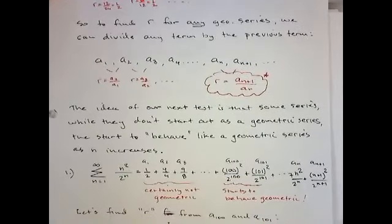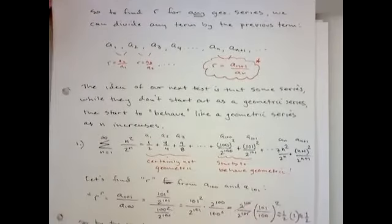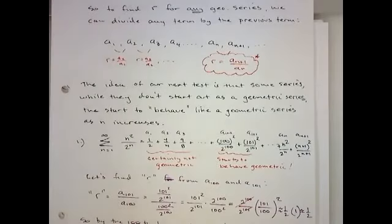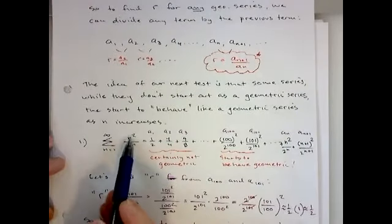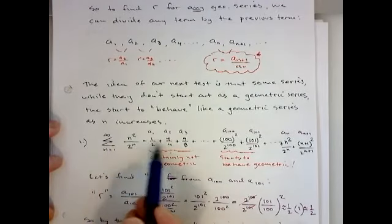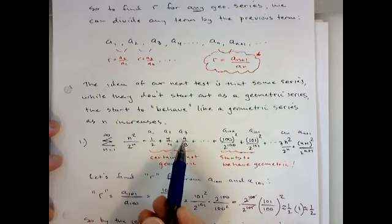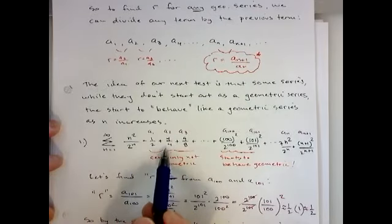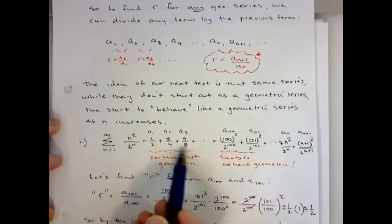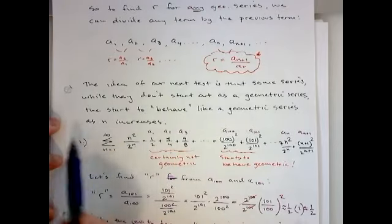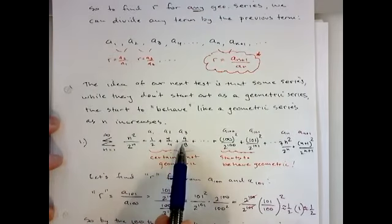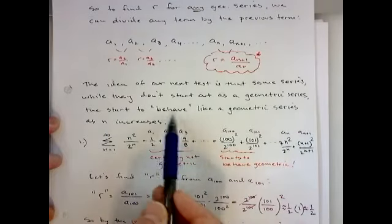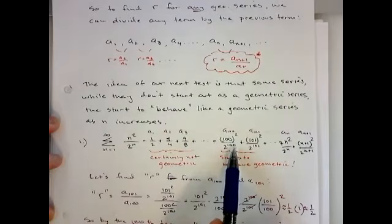The next test — let's look at this series: n squared over 2 to the n. Writing out some terms: 1/2, 4/4, 9/8. You'll quickly notice it doesn't look geometric — I'm not multiplying by the same number to get from one term to the next. But an interesting thing about some series is that even though they don't start out behaving like a geometric series, as n gets bigger it starts to, quote unquote, behave like a geometric series.